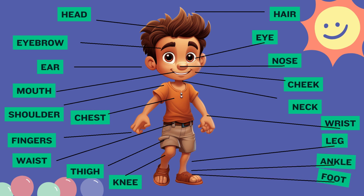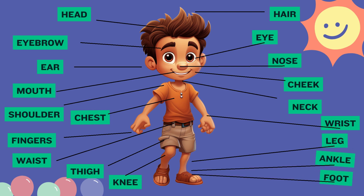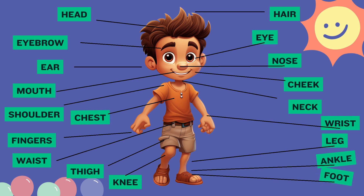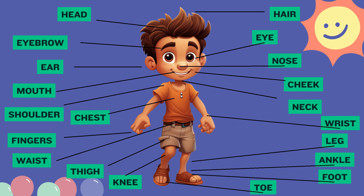Ankle and foot. The ankle is the joint that connects the bones in the lower leg to the foot bones. The foot and ankle provide various important functions, which includes supporting body weight and providing balance. Toe. The main function of your toes is to provide posture and balance, and support our body weight.